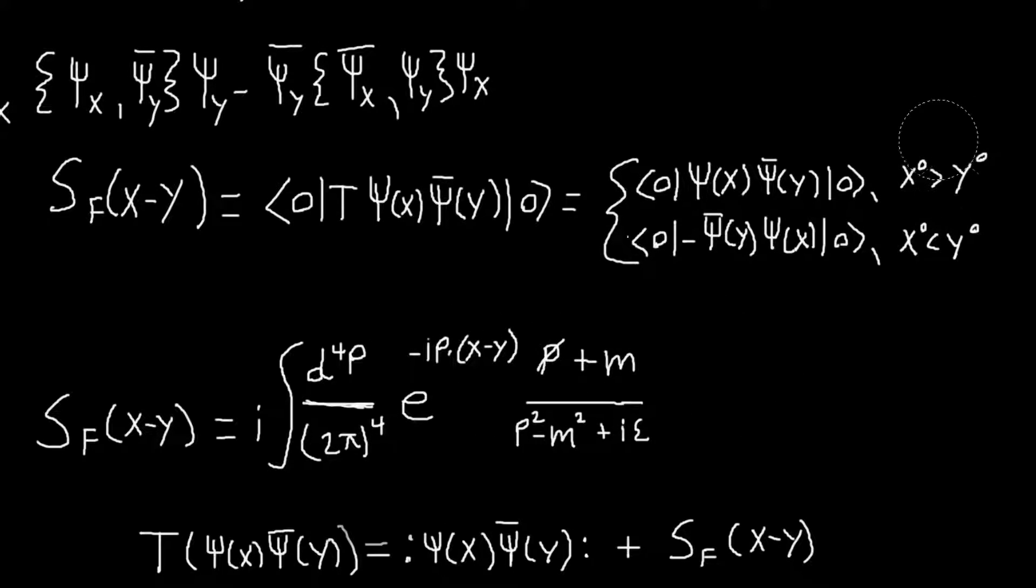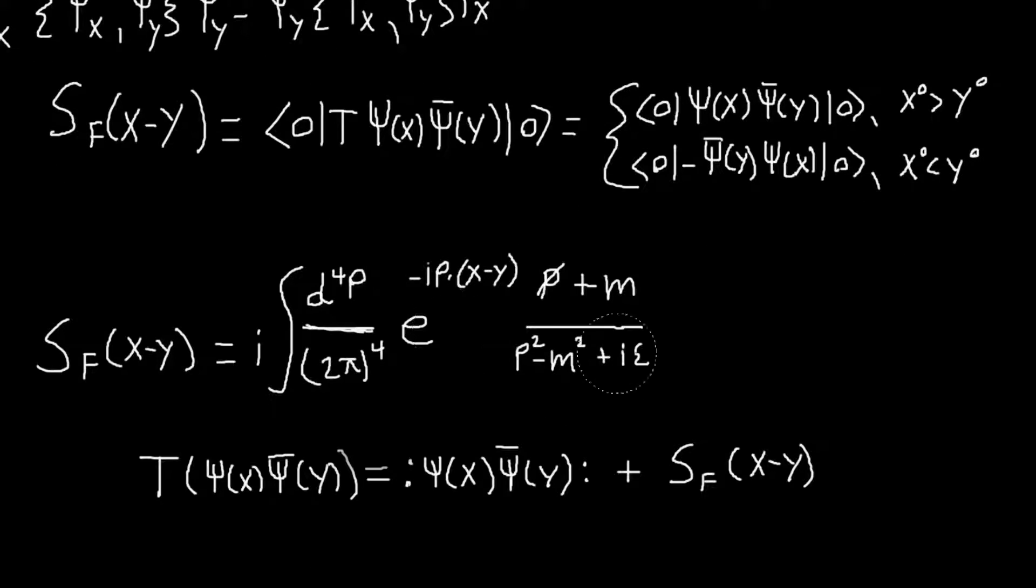So there's two cases based on which time is earlier, which coordinate time is earlier. And that can be compactly written here based on this contour integral. And so you just choose different contours based on whether or not X0 is greater than Y0 or vice versa. And so this is the term that will be popping up in our expressions for the amplitudes for scattering.